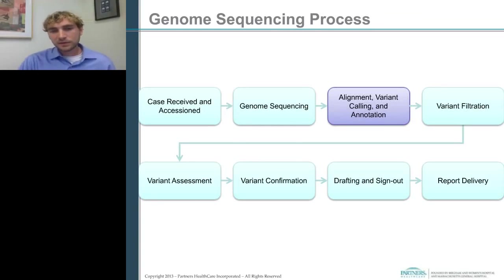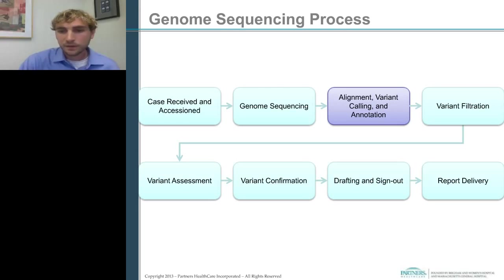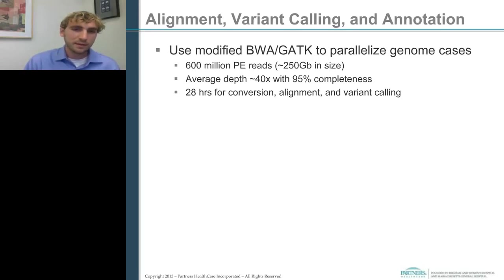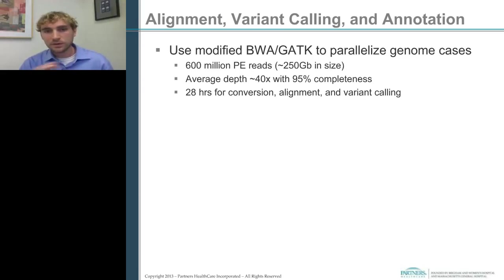Once the case is accessioned and processed, the genome sequencing component is done — either within the lab or at an external lab. Once you have the raw data, you do alignment, variant calling, and annotation. We've used a modified version of BWA and GATK to parallelize our genome cases. On average we get 600 million paired-end reads, approximately 250 gigabases in size for the compressed BAM file, at an average depth of approximately 40x with 95% completeness across the genome. Converting the BAM file back to FASTQ and running alignment and variant calling takes about 28 hours in our pipeline.